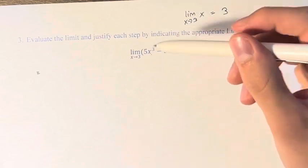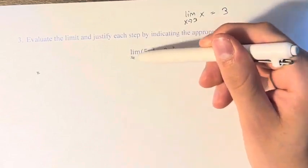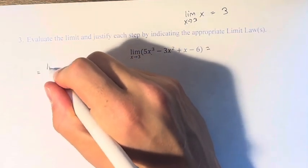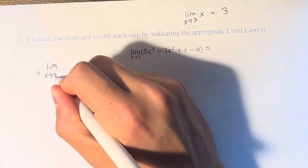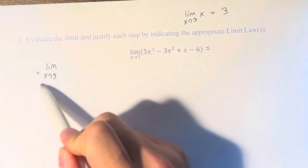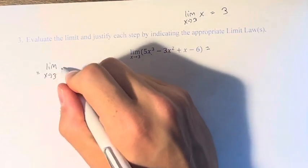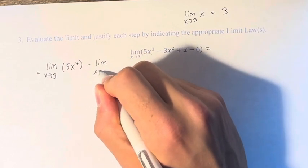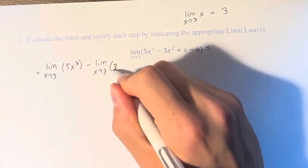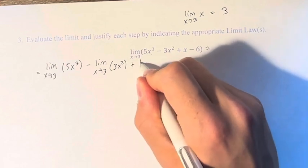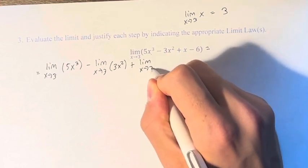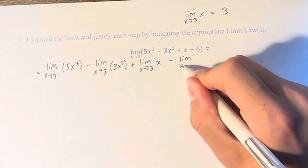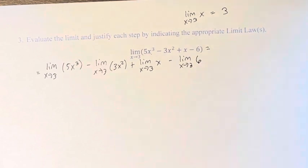And so what that means is that we take these individual terms and we take the limits of those. So this is equal to the limit, and it's always the limit as x approaches 3, so I'm not going to say it every time. So the limit of 5x cubed minus the limit of 3x squared plus the limit of x minus the limit of 6.